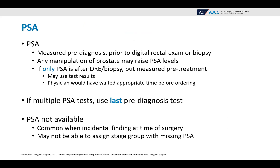The PSA is measured pre-diagnosis, prior to digital rectal exam or biopsy. Any manipulation of the prostate may raise the PSA levels. If the only PSA is after a DRE or biopsy but measured pre-treatment, you may use those test results, because the physician would have waited an appropriate amount of time before ordering them. If there are multiple PSA tests, use the last pre-diagnosis test. If the PSA is not available — which is common with an incidental finding at time of surgery — you may not be able to assign the stage group.